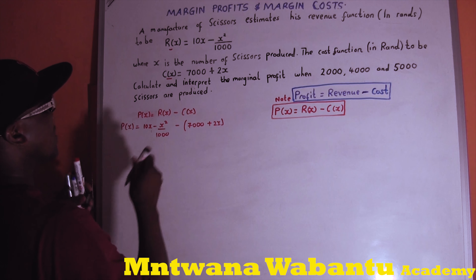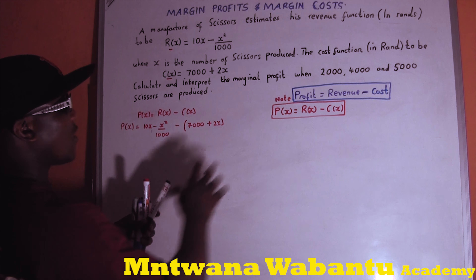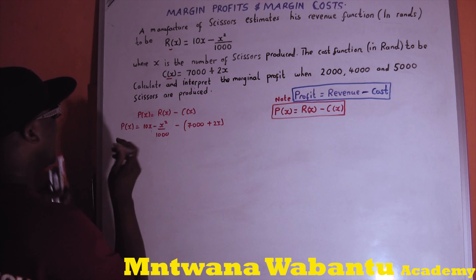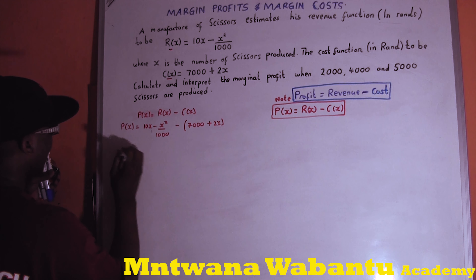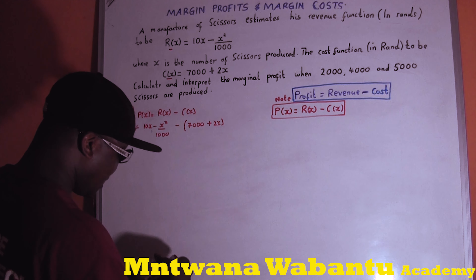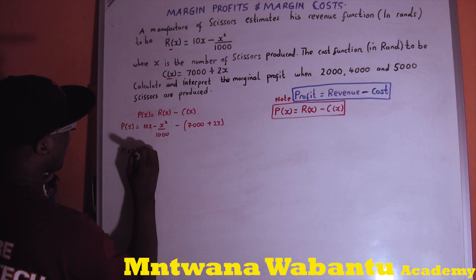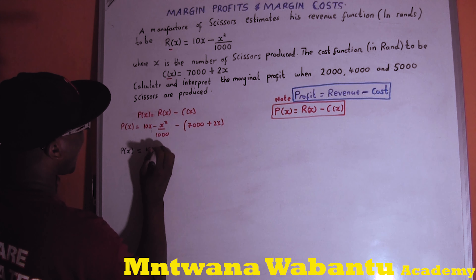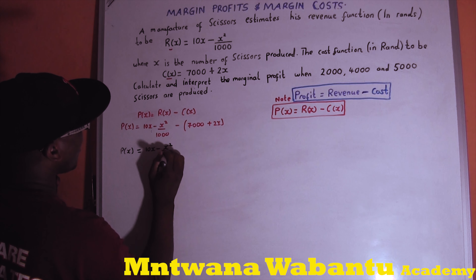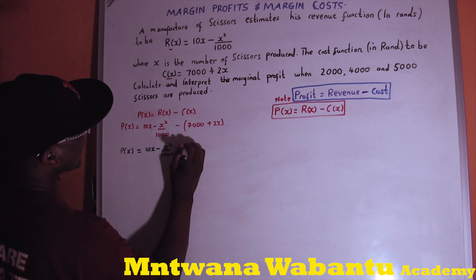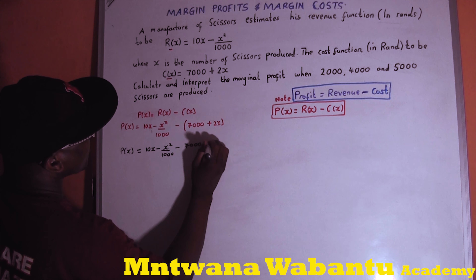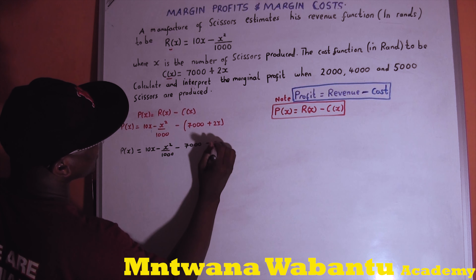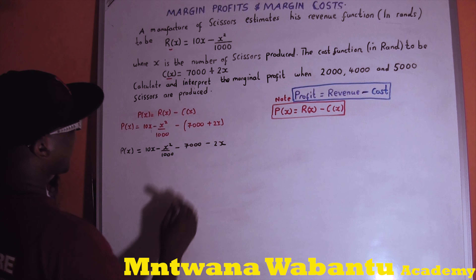Now open the bracket. When you distribute the negative sign, the profit function becomes: 10x minus x-squared over 1000 minus 7000 minus 2x.